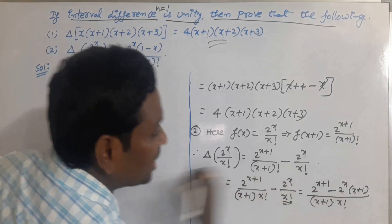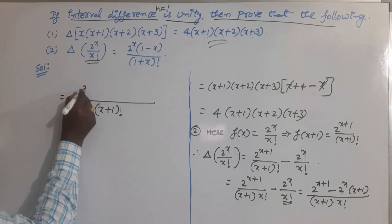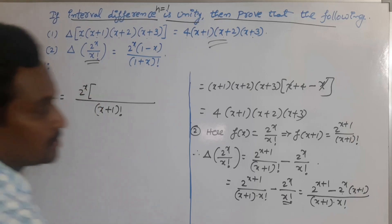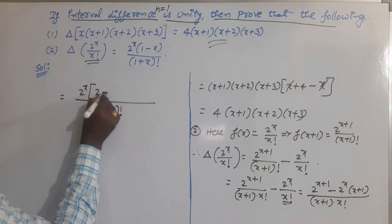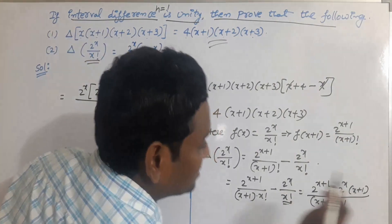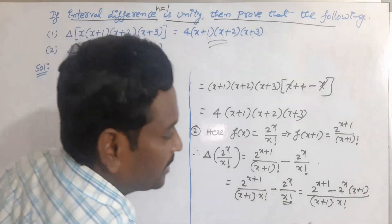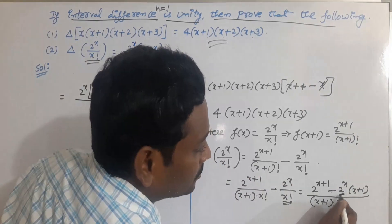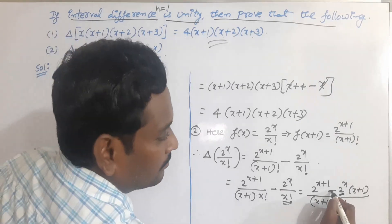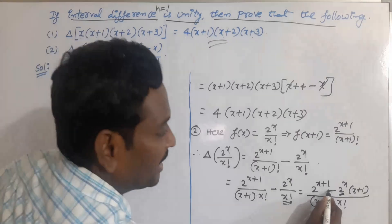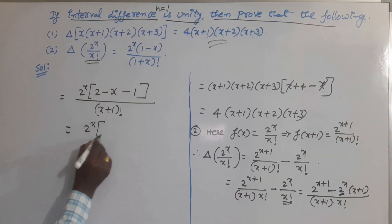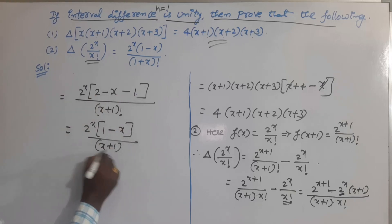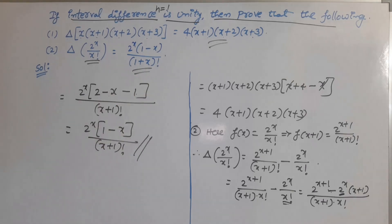The denominator (x+1)·x! is just (x+1)!. In the numerator, 2^x is the common factor, giving 2^x times (2 - (x+1)), which simplifies to 2^x(1 - x). Therefore, delta of 2^x / x! equals 2^x(1-x) / (x+1)!, which is the required result.